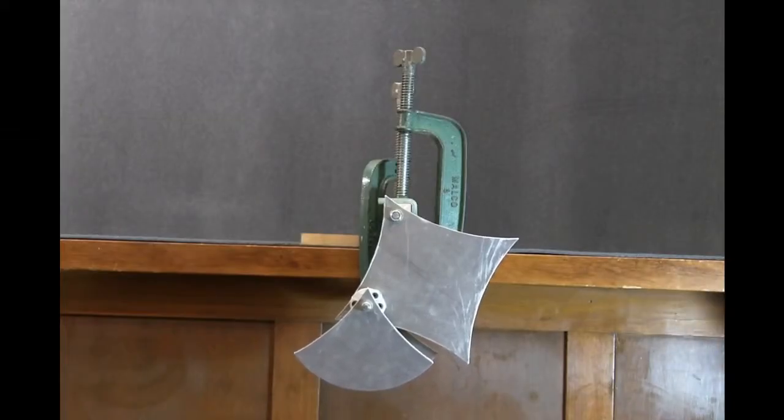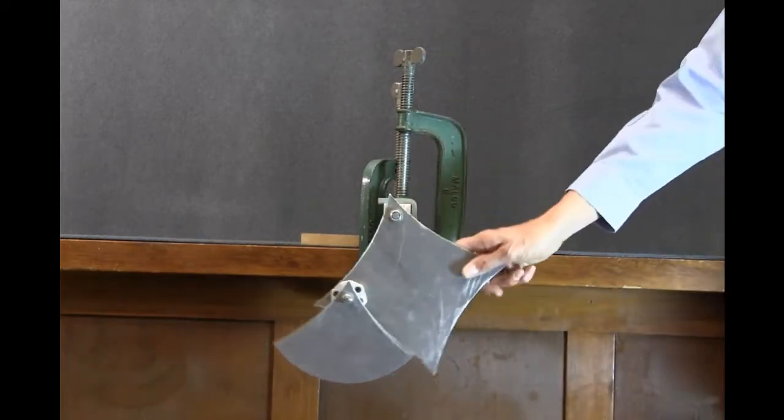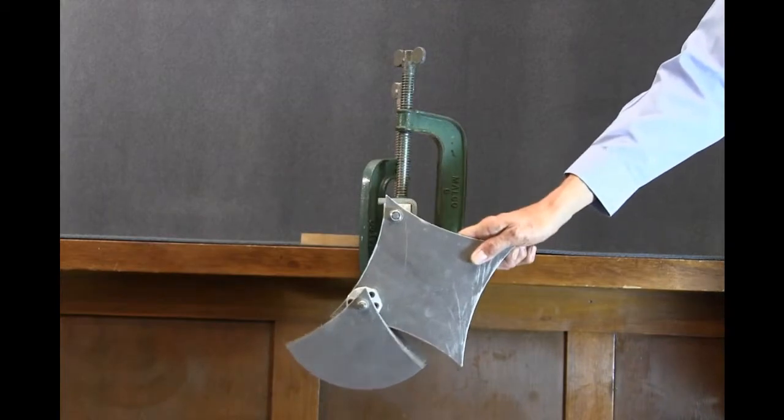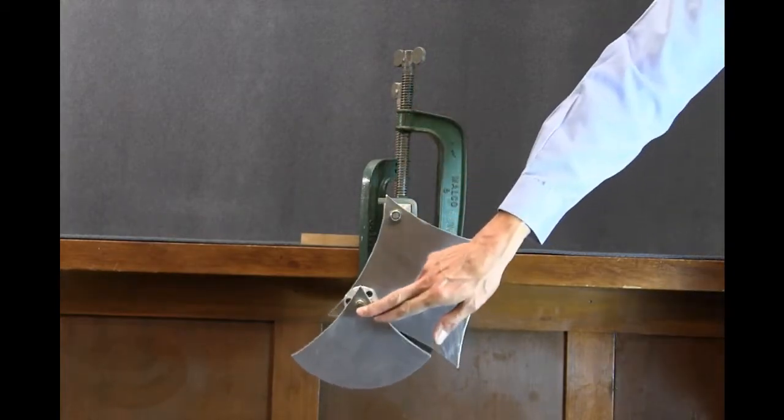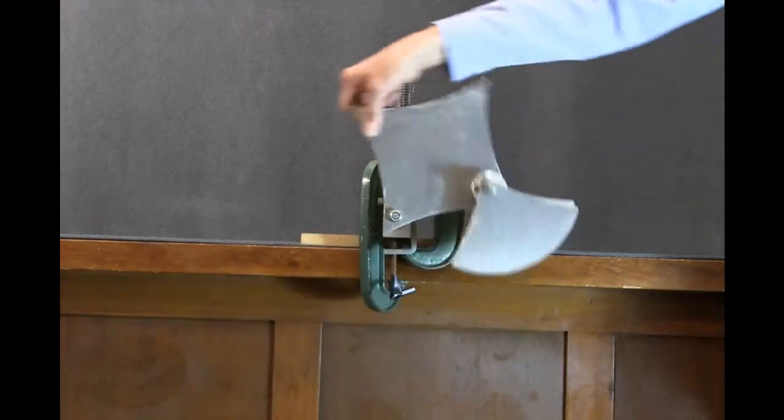What we have here is a chaotic double pendulum. You can see that there are two pendulums here, each one being an oddly shaped piece of aluminum and they're joined together by these frictionless bearings that allow the pieces to swing and rotate.